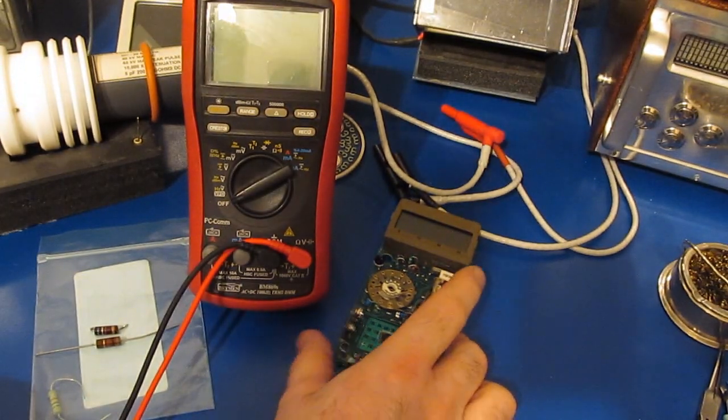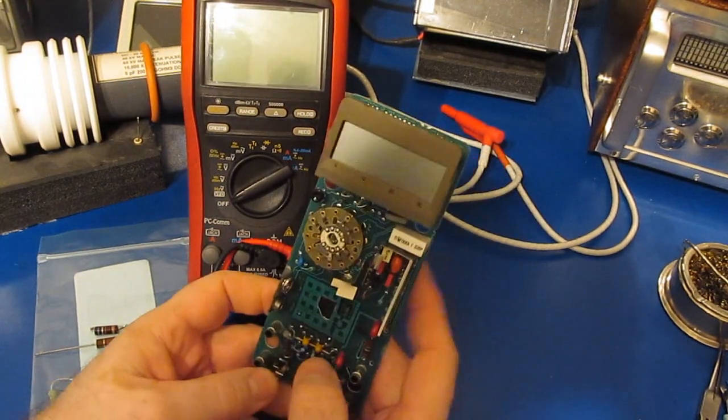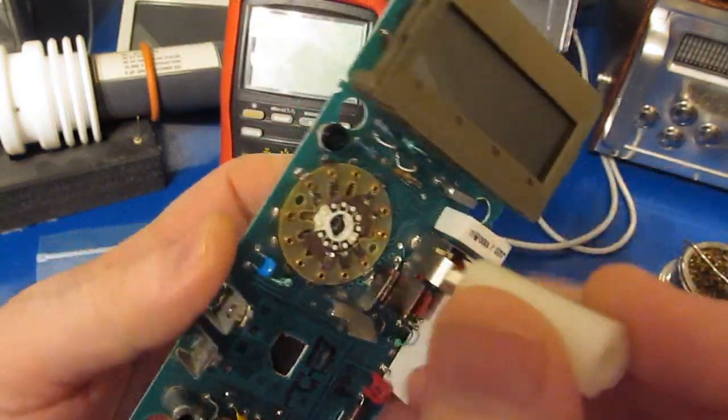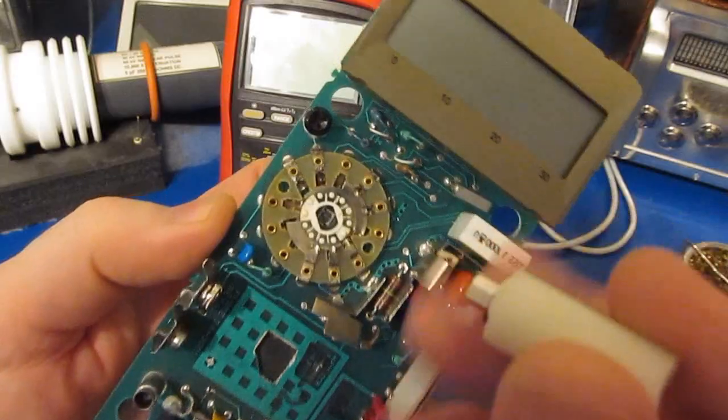Hello again and welcome. In the last video we were looking at this Fluke 77 that I pulled out of the dumpster. A few of you offered suggestions on what to do with the meter before I return it to the dumpster.